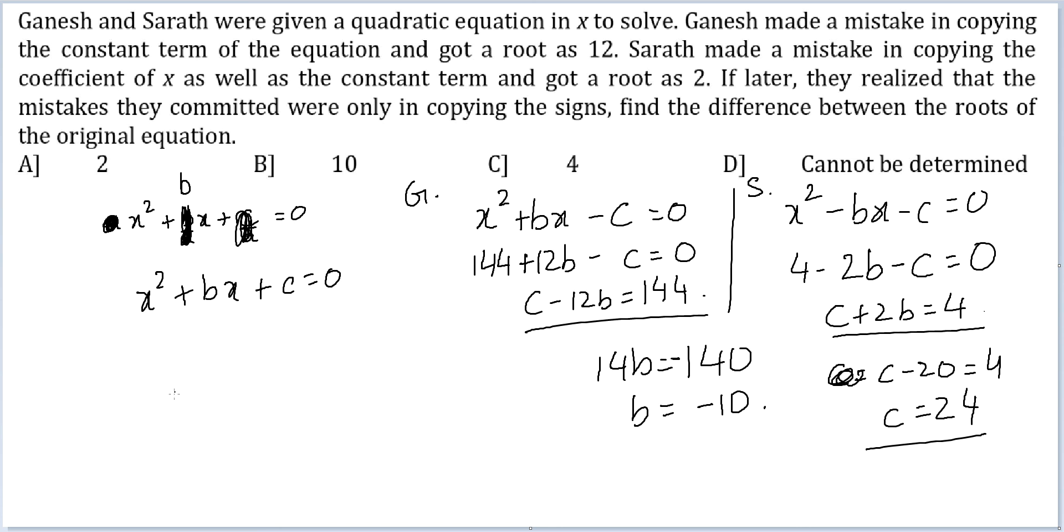So the original equation that we are dealing with is x squared minus 10x plus 24 is equal to 0. This will break down into x minus 6, x minus 4.